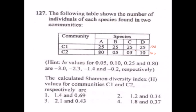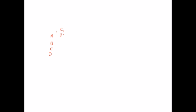According to the formula, we first calculate PI — the relative abundance of each species in the community. We divide the number of individuals of a species by the total number of individuals. For community C1, species A, B, C, and D each have 25 individuals out of 100, so PI for each species is 0.25.